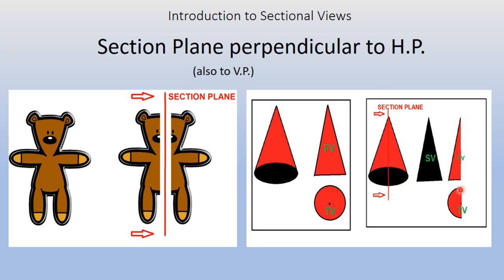There will be no hatching lines in the front view and top view, but the black color here indicates that this is going to be represented with hatching lines. I will explain hatching lines while solving the problems. You just need to observe that this is the sectioned portion which is visible from the right-hand side.